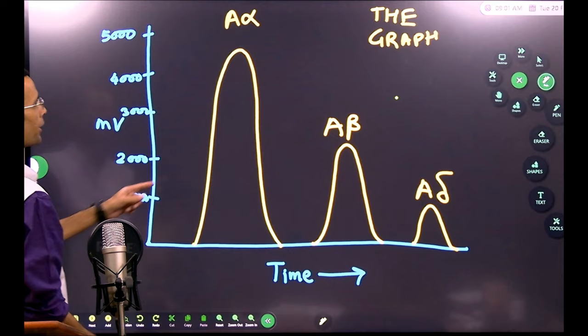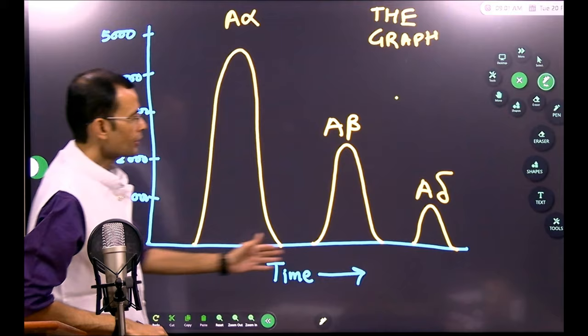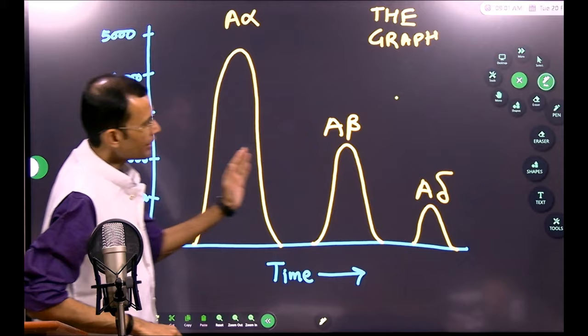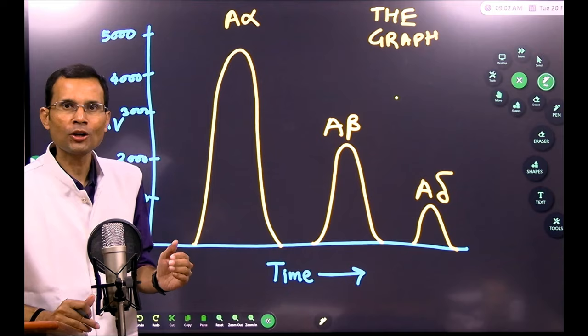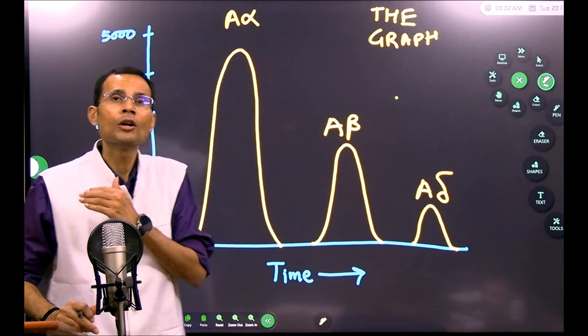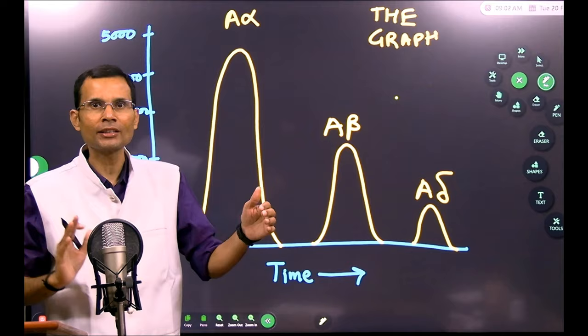This is the actual graph of the compound action potential. On the horizontal axis, there is time. The different peaks appear at different points in time because different fibers conduct the action potential with different velocities, and therefore reach the recording electrode at different times — just like each athlete reaching the finishing line at separate times.